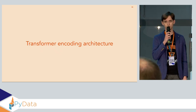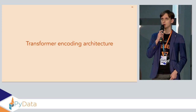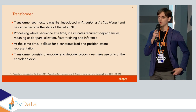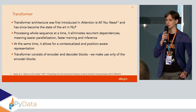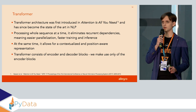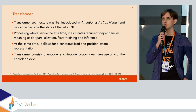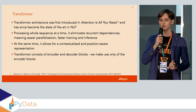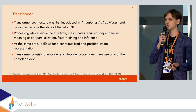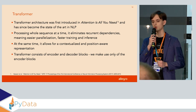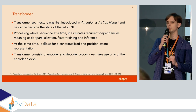Now that the learning-to-rank basics have been covered, let me introduce the transformer — the neural architecture we used in our model. The transformer was first introduced in the 'Attention Is All You Need' paper in 2017 and has since become state of the art in NLP and machine translation. The key contribution was processing a whole sequence at once. RNNs and LSTMs have a sequential nature that makes them difficult to parallelize, slow to train and infer, and subject to exploding/vanishing gradient problems. The transformer tackles these problems using a contextualized and positional representation via an attention mechanism and positional embeddings.